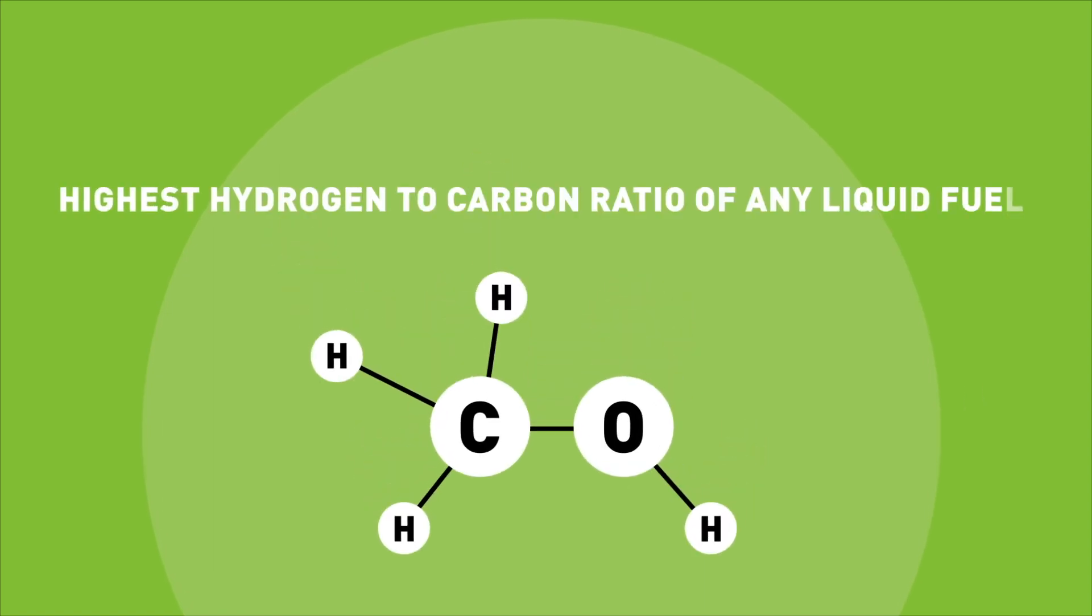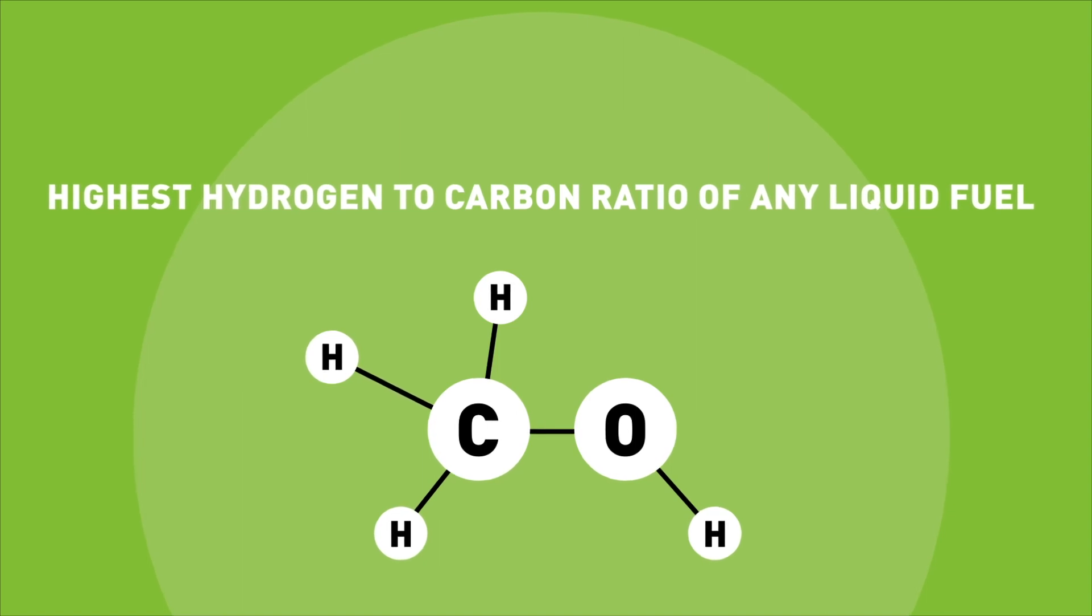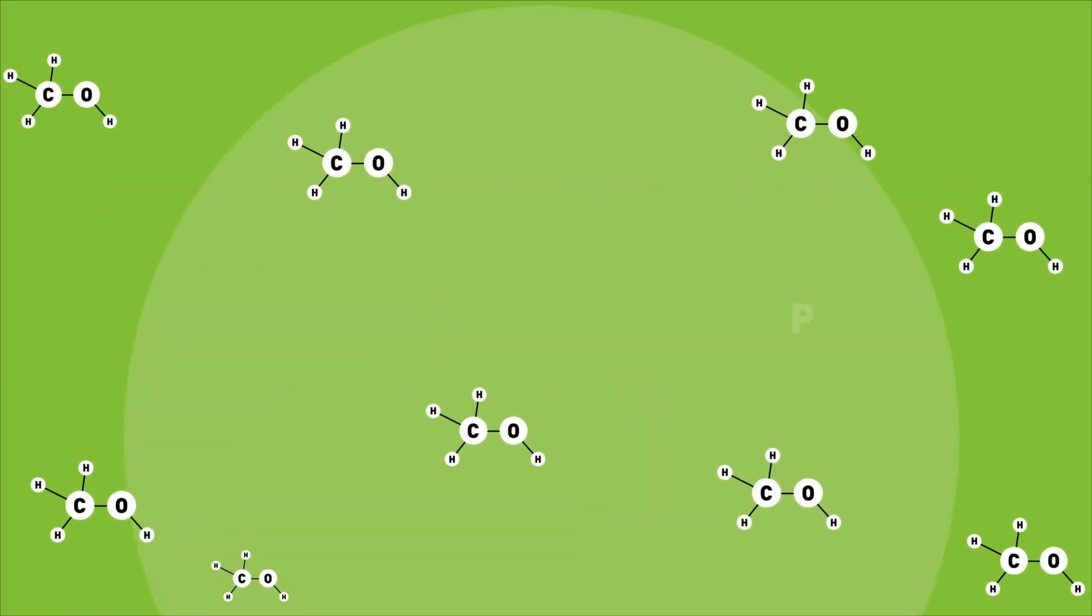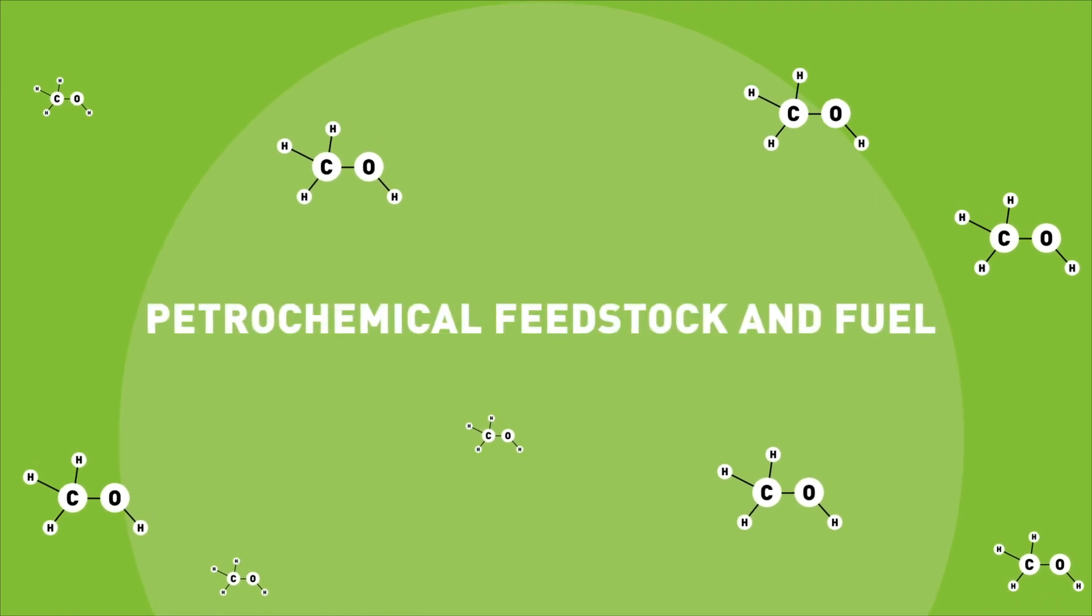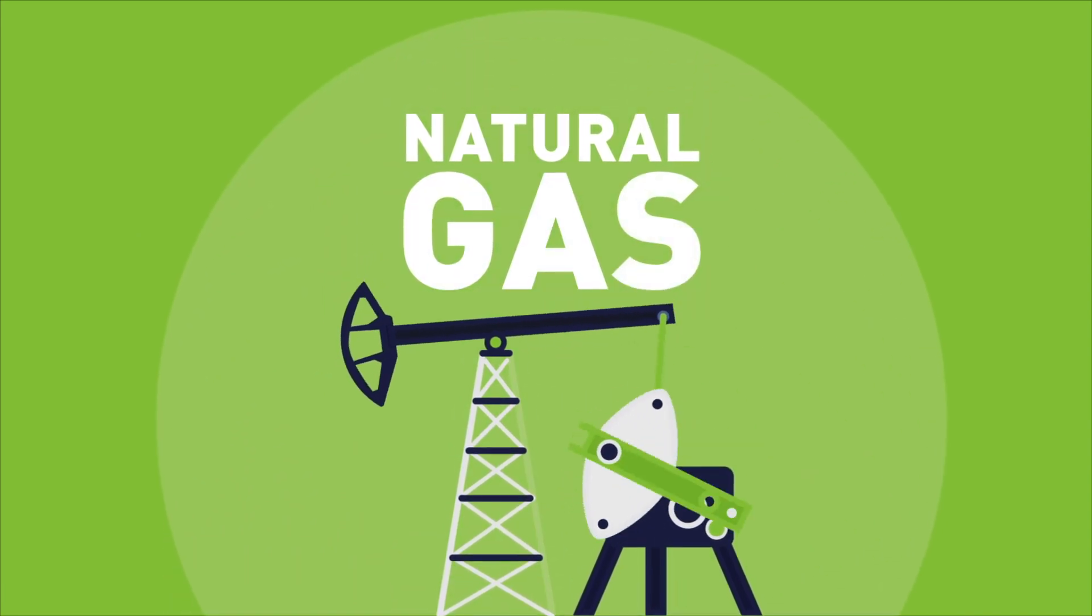As the simplest alcohol, methanol comprises of hydrogen, oxygen and a single carbon atom. It has the highest hydrogen-to-carbon ratio of any liquid fuel. These chemical properties contribute to methanol's sustainability as a petrochemical feedstock and fuel. Methanol is commonly produced from natural gas.